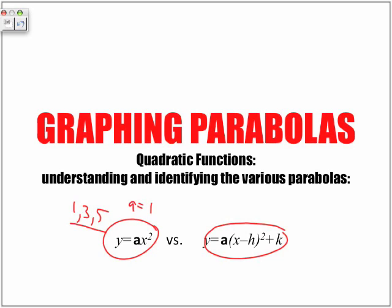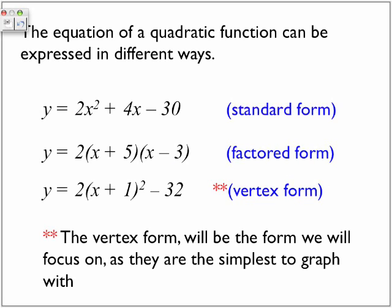Now, in terms of what we've looked at in previous lessons, is how our quadratic functions show, let's say, in our notes or in our textbook. So let's look at the different formats. The equation of a quadratic function can be expressed in different ways. First one, standard form. It's in the form of y equals ax squared plus some kind of bx value plus some kind of a constant c. We have the factored form, which we're not going to look at today. And finally, we have the vertex form. The vertex form will be the form we will focus on as they are the simplest to graph with.